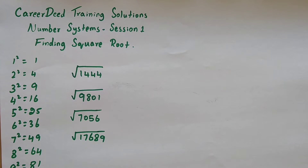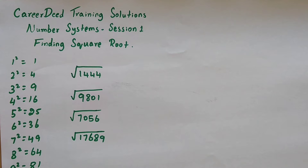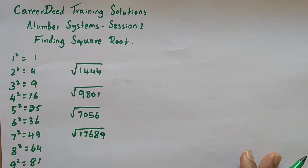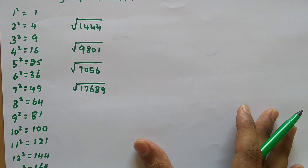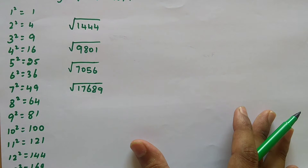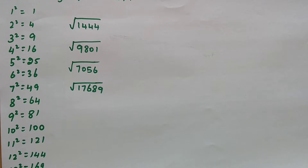Welcome to Kereded Training Solutions. Myself Mohan, and this is session 1 on number systems. In this video, I will show you how to find the square root of any perfect square in less than 20 seconds. For your reference, I have written 1 squared to 15 squared, and it is essential to remember at least up to 20 squared to solve simplification problems easily.